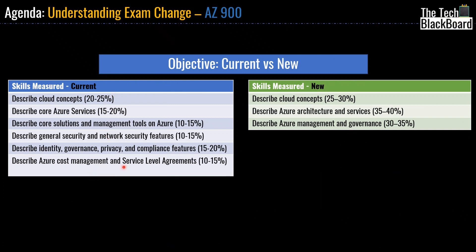On the left hand side you can see that we currently have six major categories of skill measures applicable for the AZ-900 exam until 5th of May. However, post 5th of May we will be having three major categories for the AZ-900 certification exam. There has been a lot of things removed and a lot of things fused into other categories, so it's very important to understand which category has moved where.